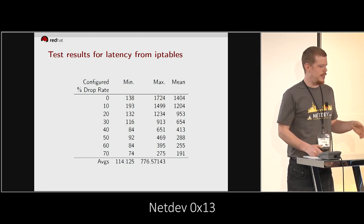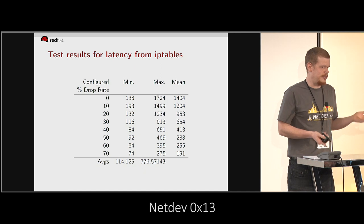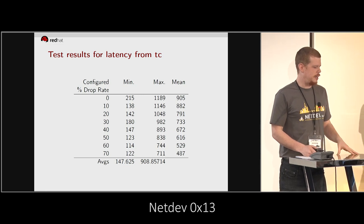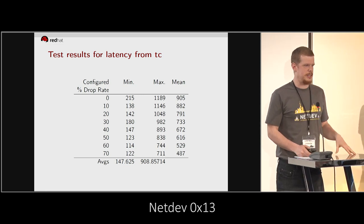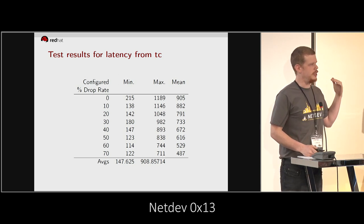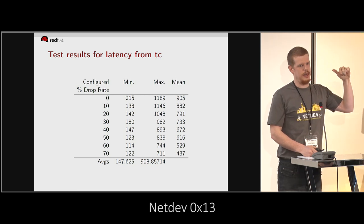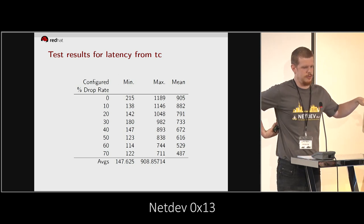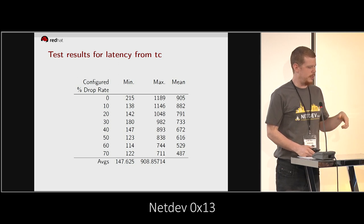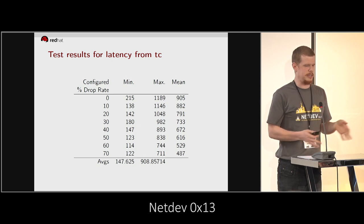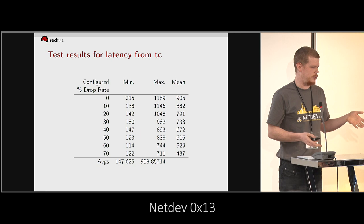So these are the numbers. They don't mean much until we look at the TC side, where we did the same test. This was, again, from the topology — packets come in, they get shunted directly to the VM, and then they egress through Open vSwitch and the VEth and bridge and all back out to the NIC. And again, we collected the latency that it took, or the latency through the system.